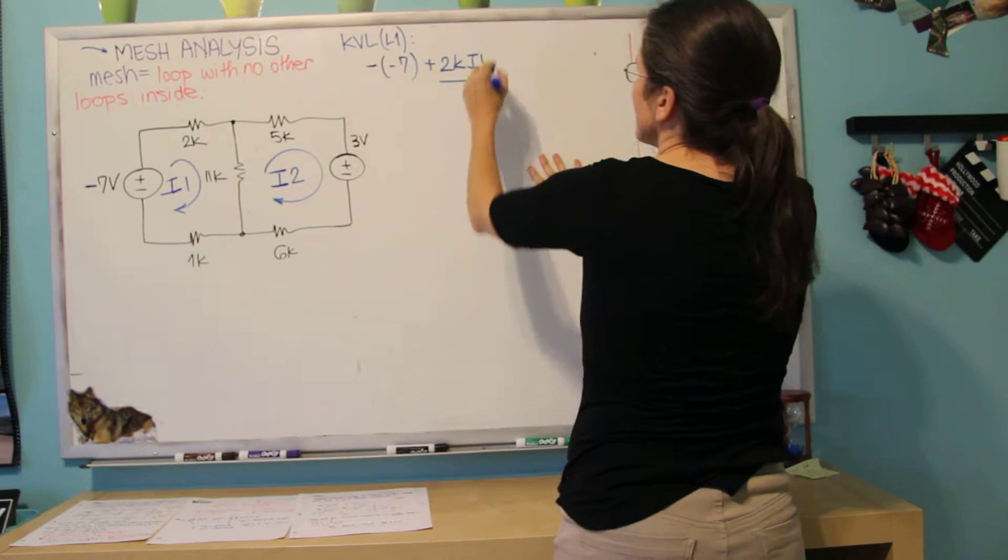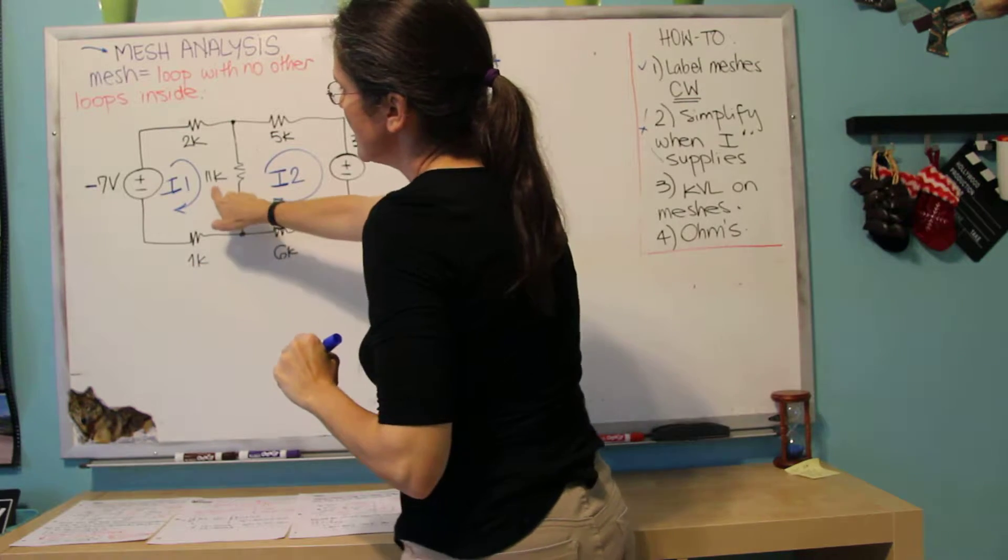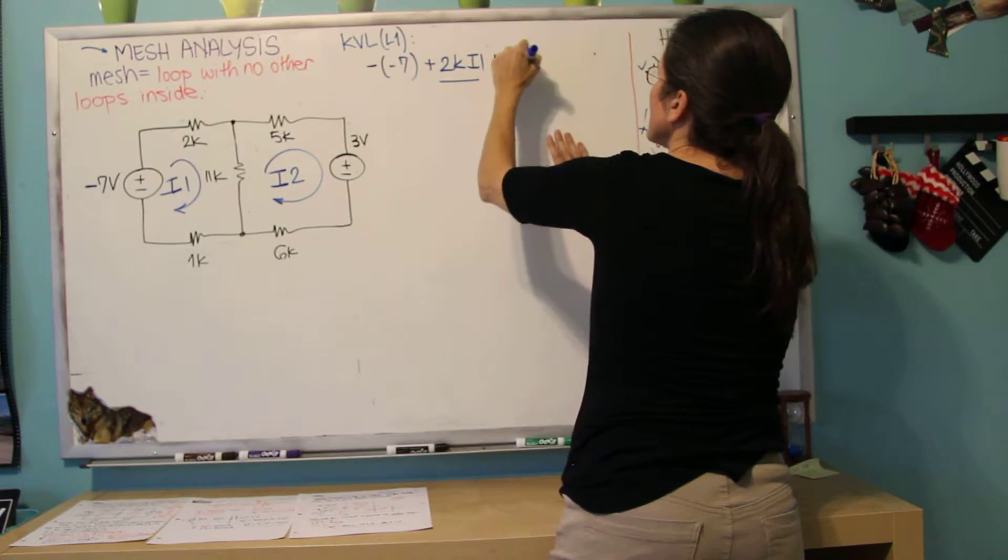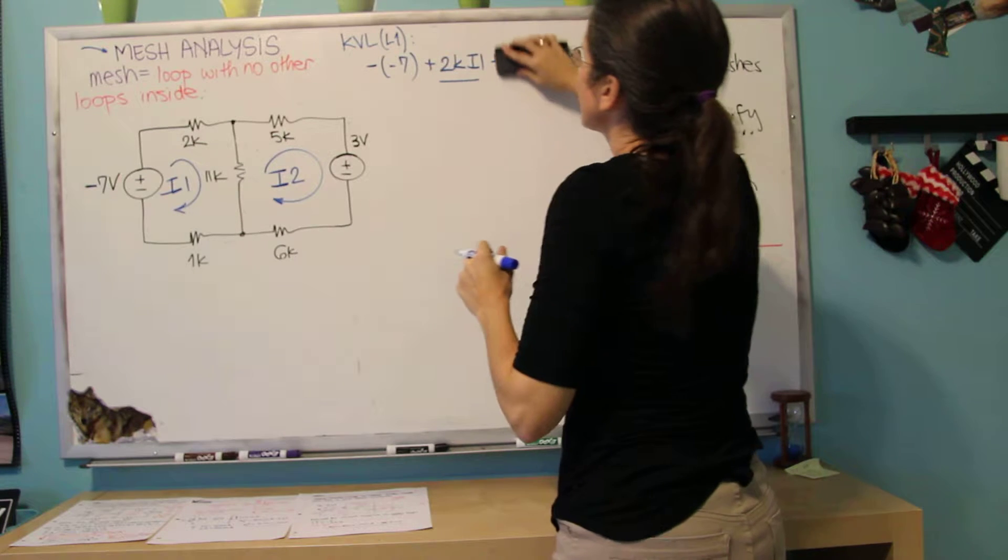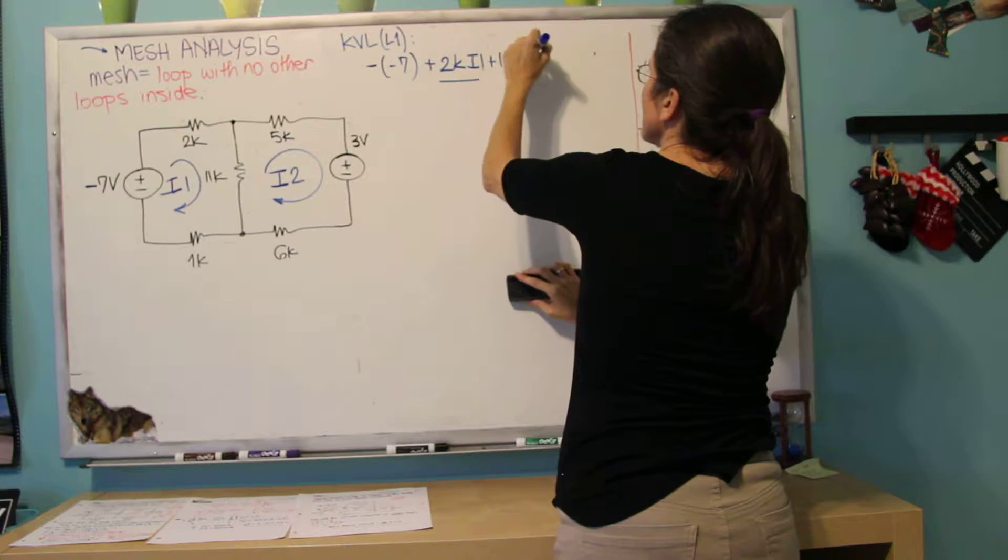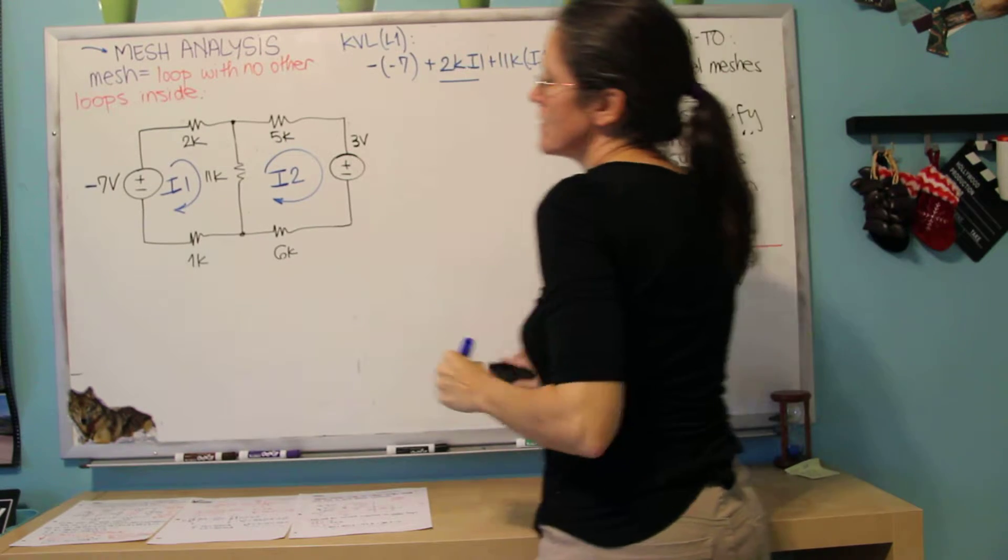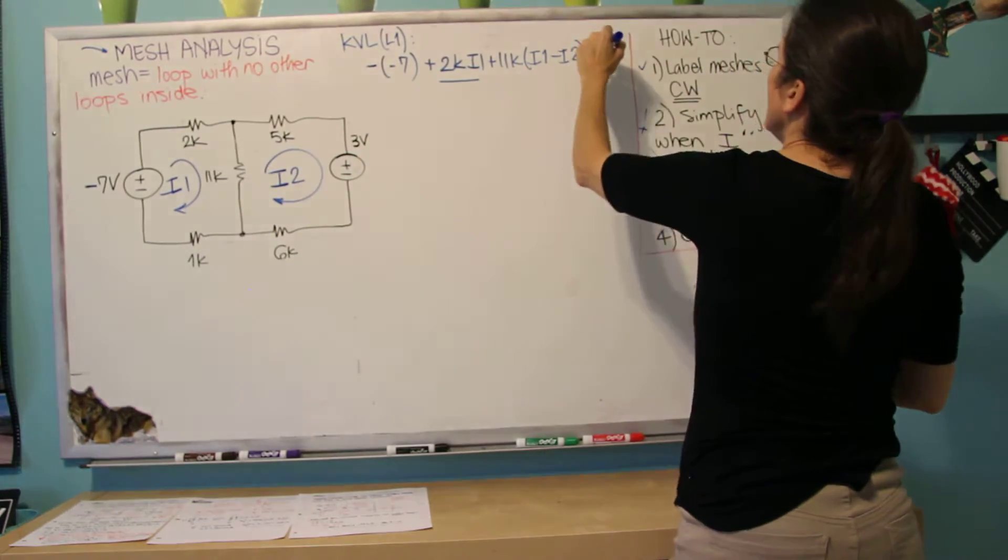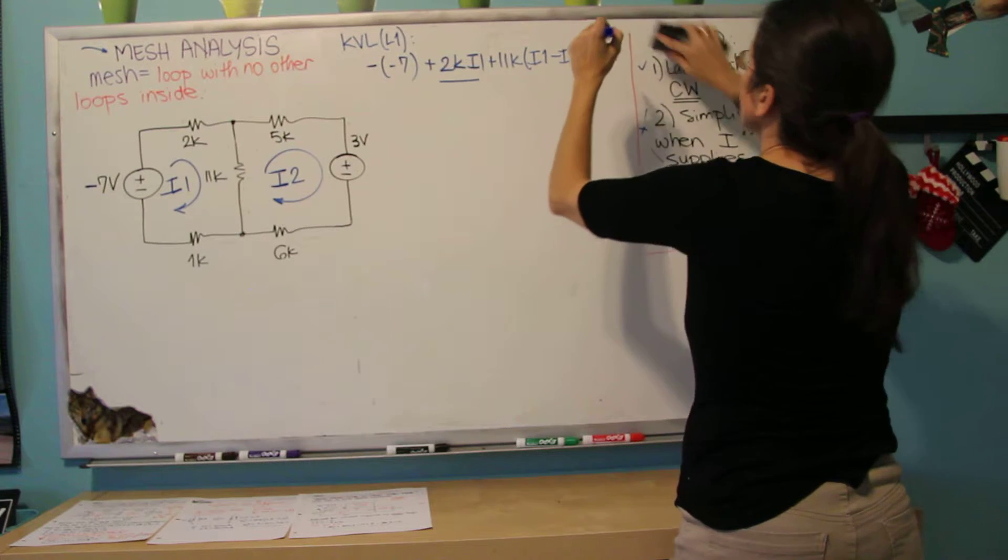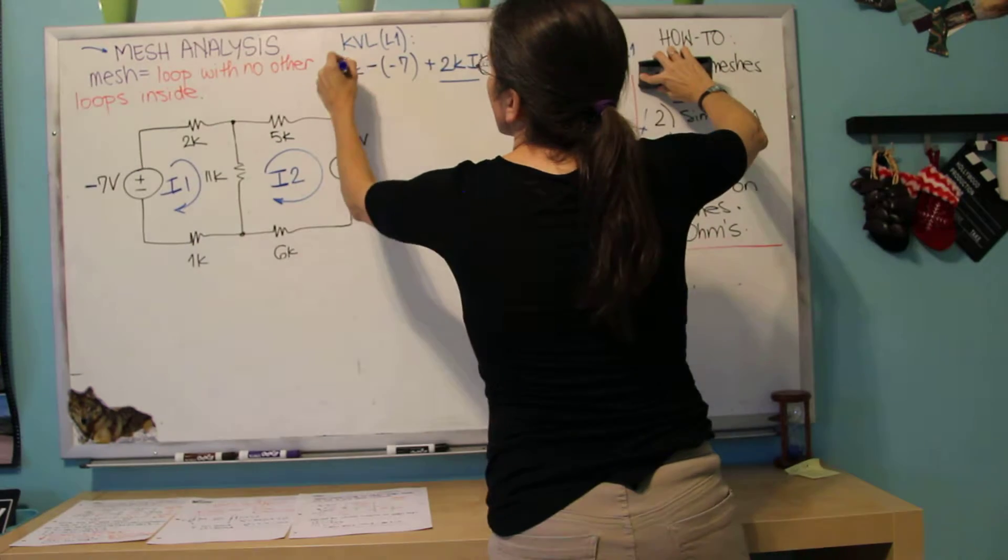So I'm going to write this KVL for this whole loop. This one, like we said in the previous video, is going to be 11K times the difference of the currents. 11K times I1 minus I2 plus 1K times I1, all this equals 0.